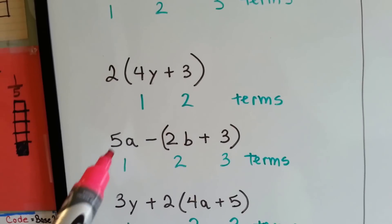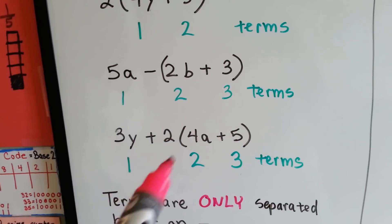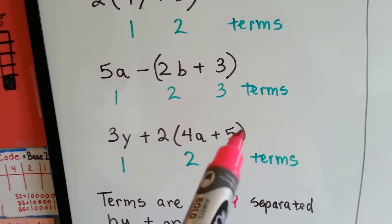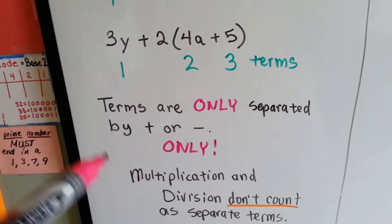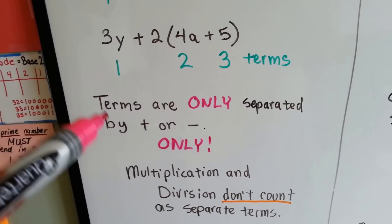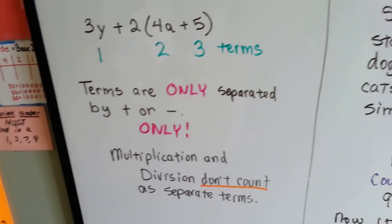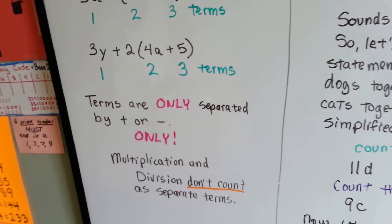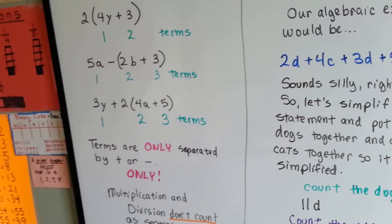One term, two terms, three terms. Terms are only separated by a plus or a minus, only. Multiplication and division don't count as separate terms. If anyone asks you, say no — only plus or minus sign.